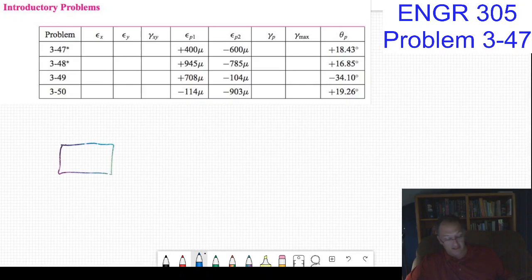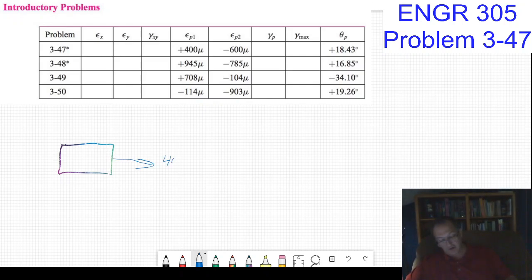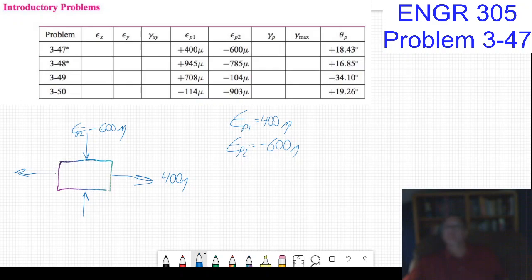I can draw this and say, let's just put principle one in the x direction. It's positive, so that is 400 micro. And then this is minus 600. I'm showing that it's negative in the negative direction. I can then make my list: epsilon_p1 equals 400 and epsilon_p2 equals minus 600 micro as my units.